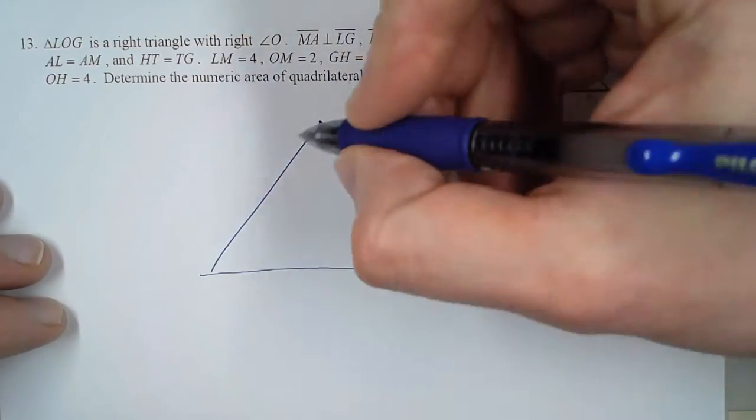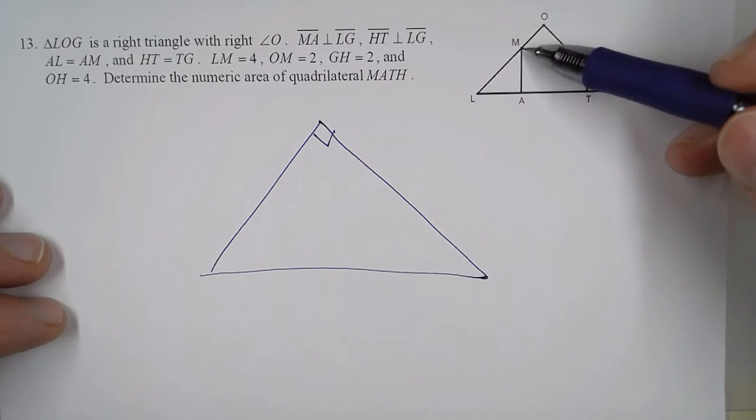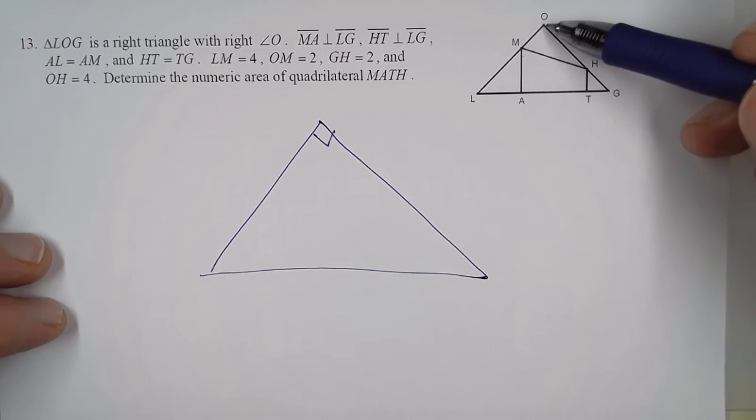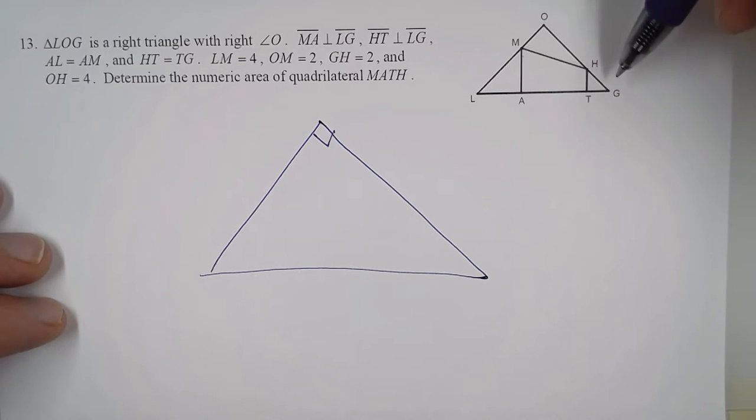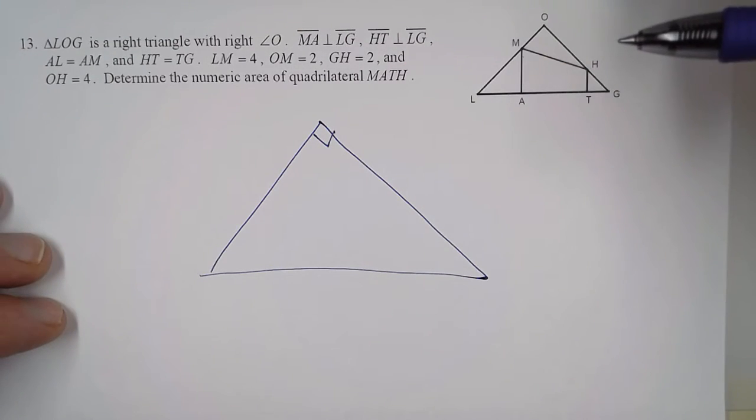Okay, so we know that this is a right triangle. Now, interestingly, we know that L-M is 4 and O-M is 2. They also give us that O-H is 4 and G-H is 2. So that means this is actually a 45-45-90 right triangle.